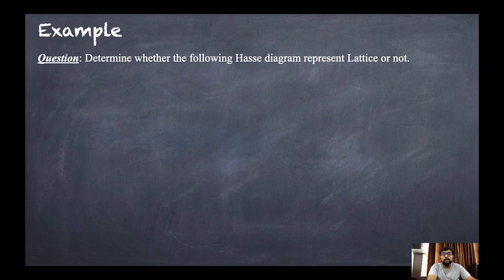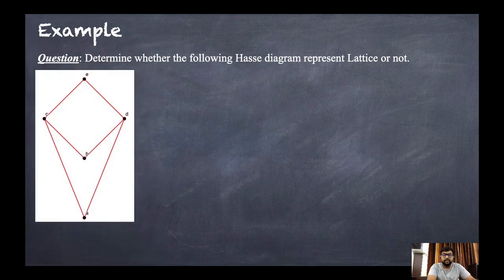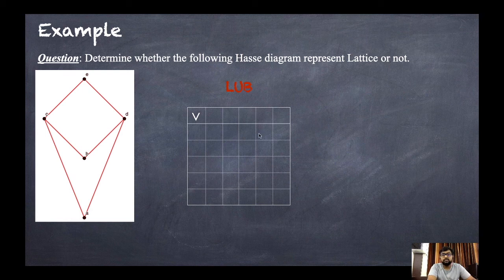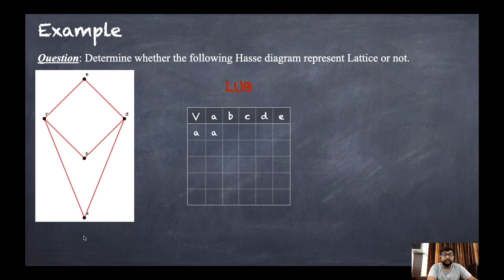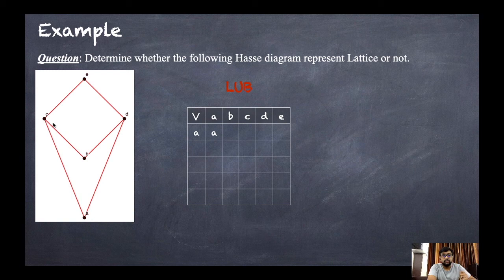Now let us discuss the second example: determine whether the following Hasse diagram represents a lattice or not. The Hasse diagram has five points, so the table will have elements a, b, c, d, e. We will create the LUB and GLB tables the same way.